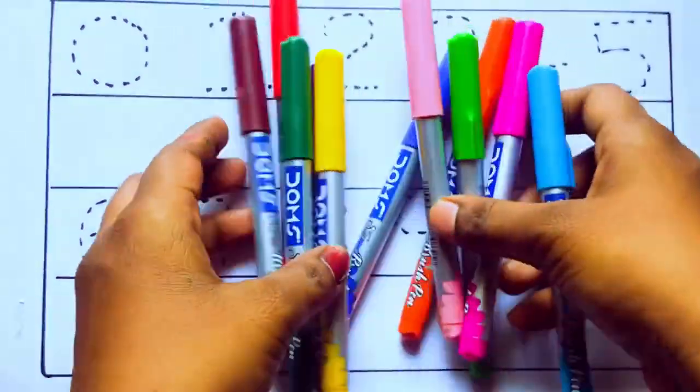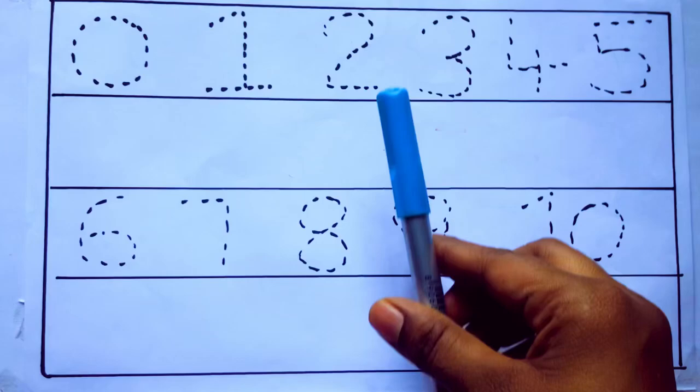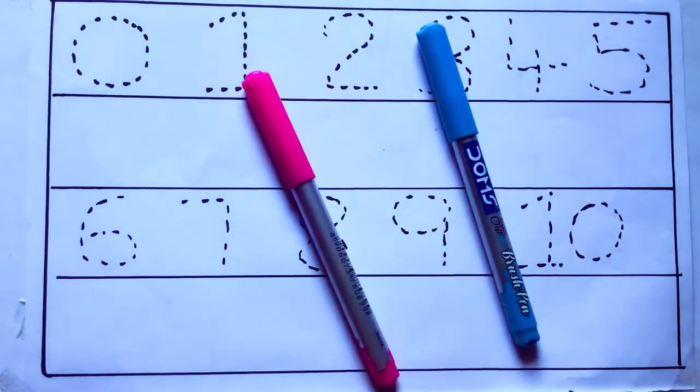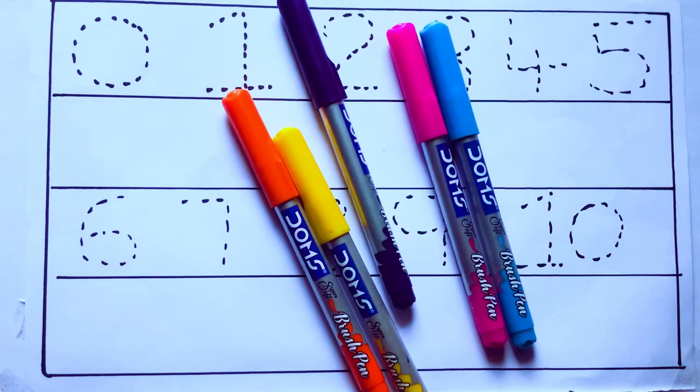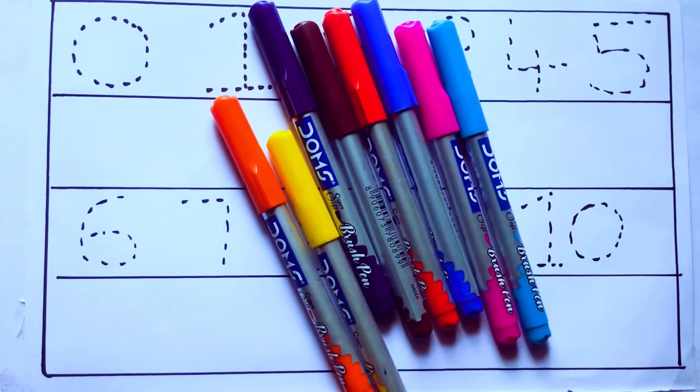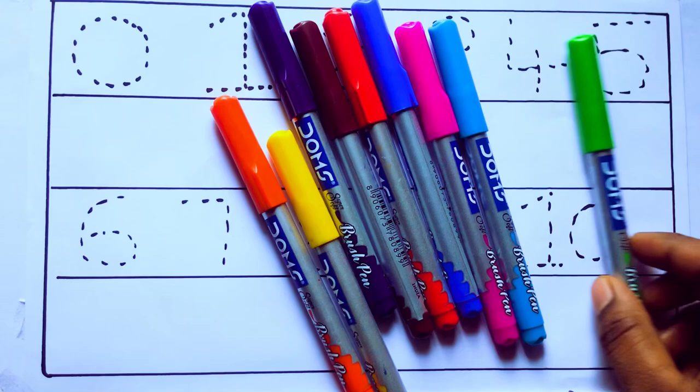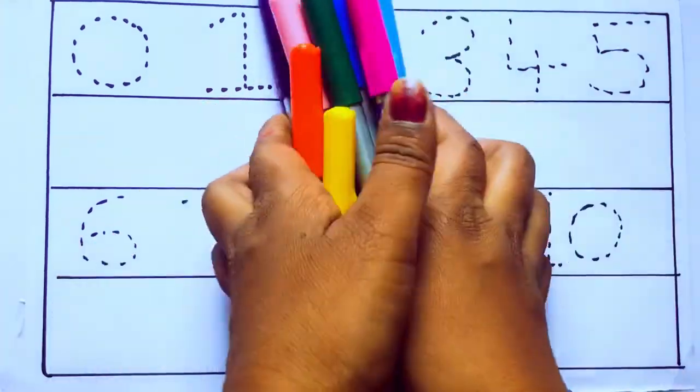Let's learn some colors. These are all the color pencils. Let's learn the names. Sky blue color, pink color, yellow color, orange color, violet color, blue color, brown color, red color, green color, and pink color.